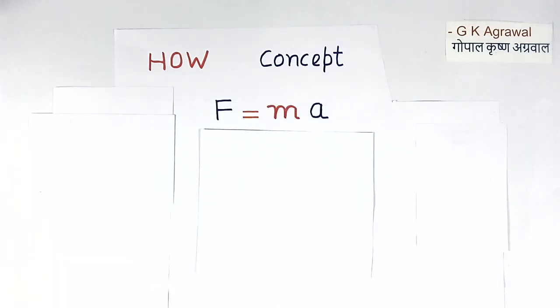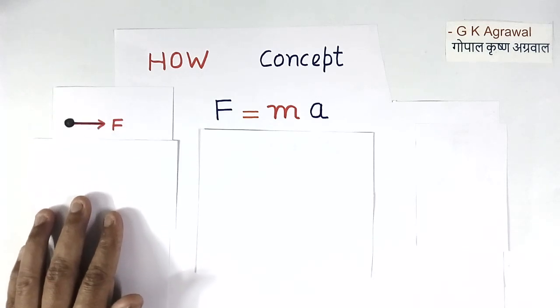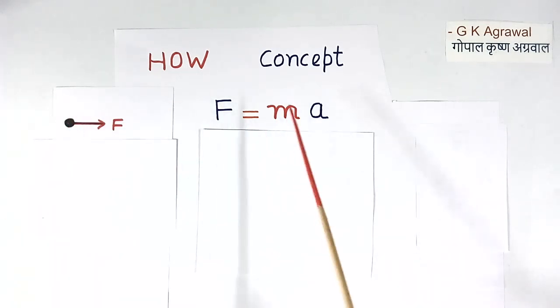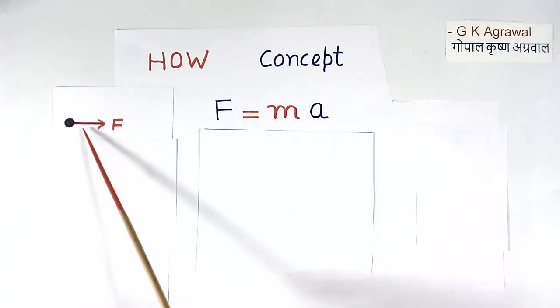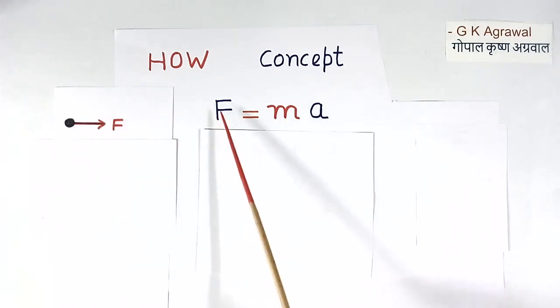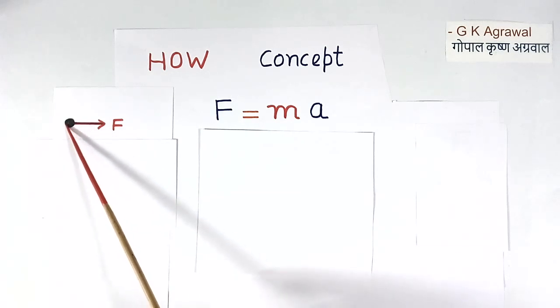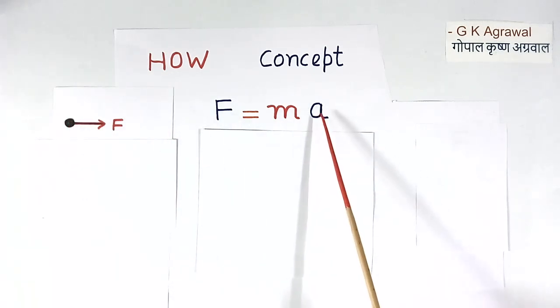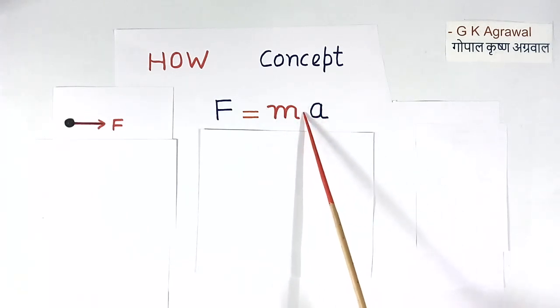The formula is force equals mass times acceleration. If there is an object of mass M and a force F is applied on it, then this object will start moving and will have acceleration A. Then mass multiplied by A will equal the force.